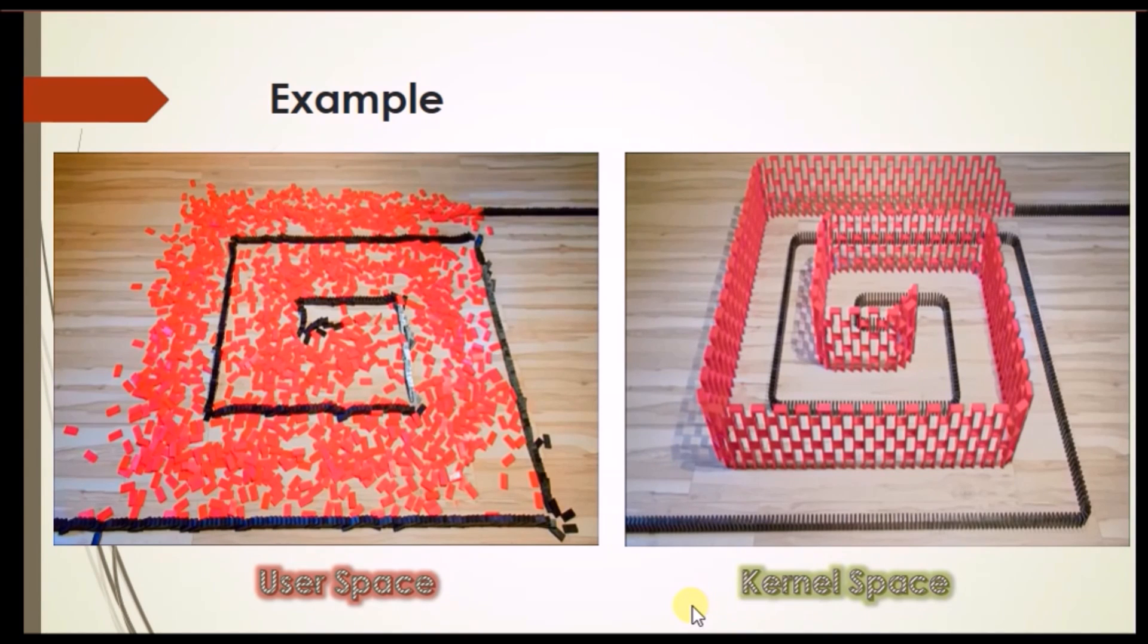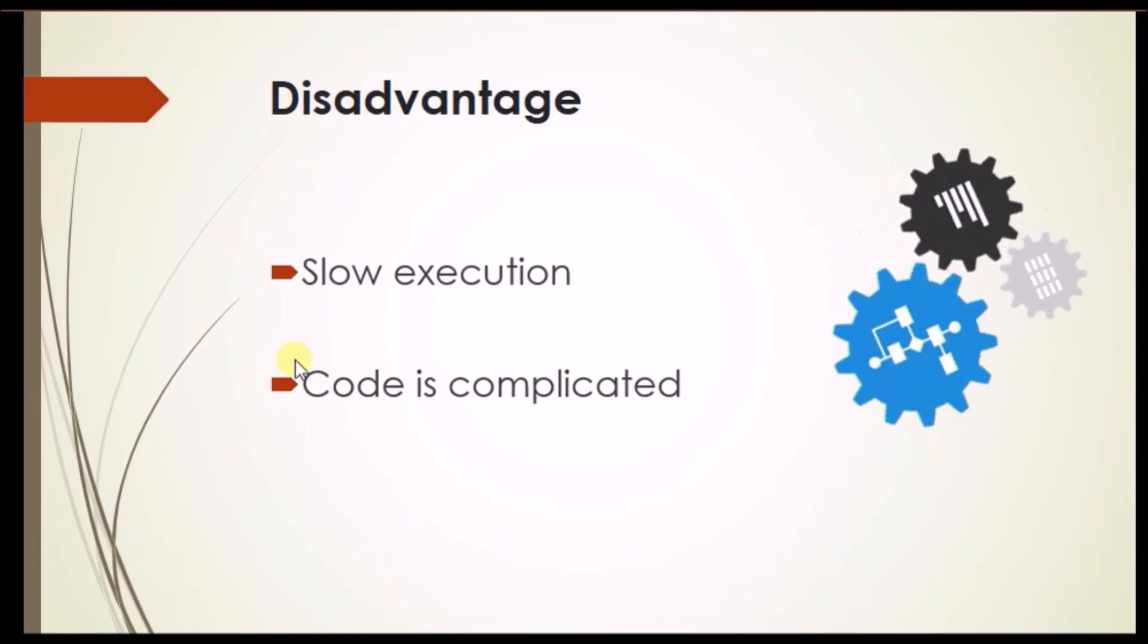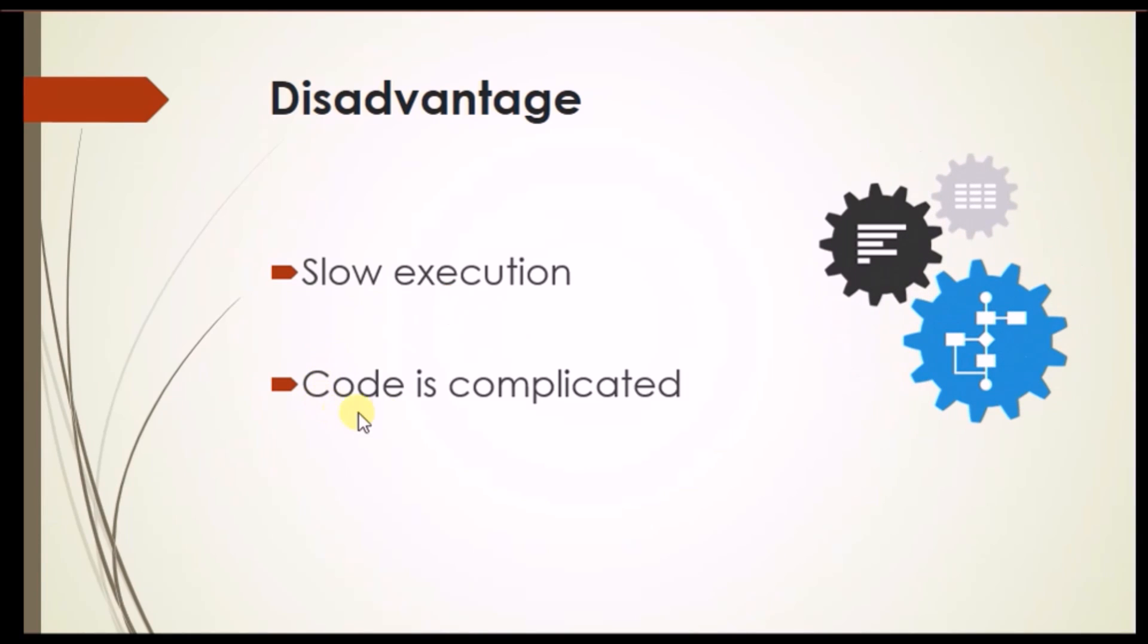Now the disadvantages of microkernels. The first disadvantage is it is slow in execution. We need to write code in both the user space and the kernel space, that's why it is slow in execution. And the second disadvantage is the code is complicated. The services are specific for kernel and the services are specific for user, that's why its code is complicated. Now Sakshi will sum up the whole thing.